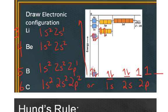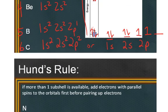The reason why is Hund's rule, which states that if more than one orbital is available, add electrons with parallel spins to the orbitals first before pairing up electrons. I shouldn't say more than one subshell here, I should say more than one orbital—that's a better way to describe it.